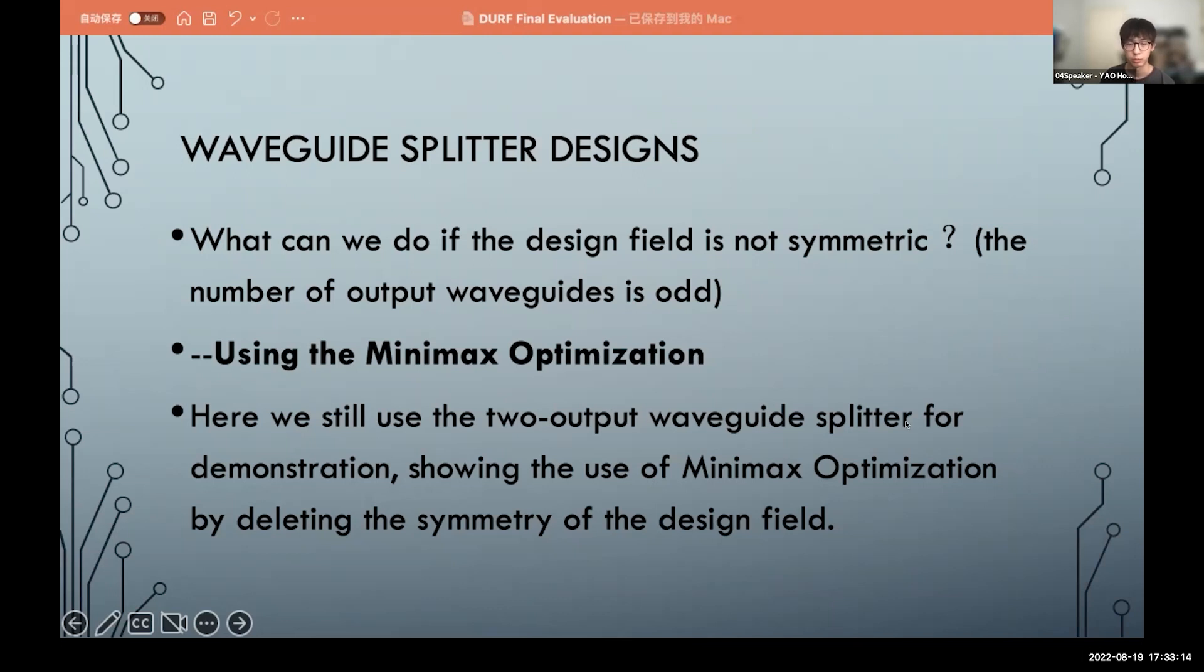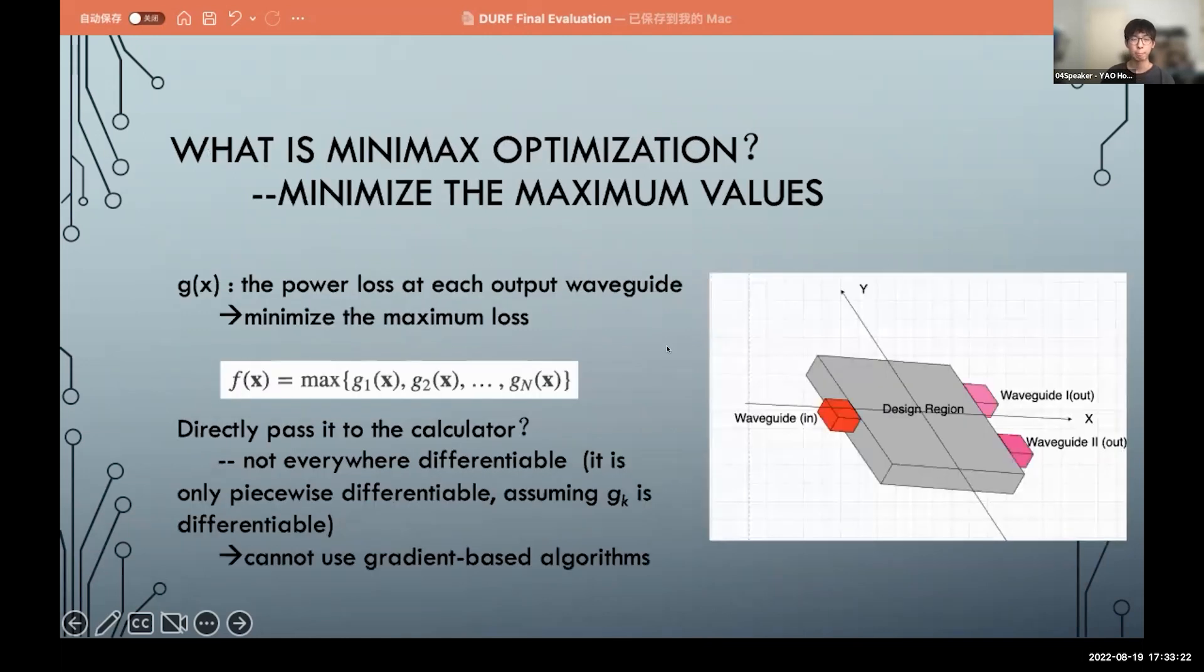But we still use two outputs for demonstration. And we shall use minimax optimization by deleting the symmetry. So what is minimax optimization? It means to minimize the maximum values. So for example, you have a lot of output loss, each output waveguide will have a loss. So you have this value and you want to minimize the maximum value of the output loss so that this loss will be smaller and be closer. So you have this f(x) means the maximum of the output loss. And why don't we directly pass this function to the calculator? Because it's not everywhere differentiable. Even if every g(x) is differentiable, but this function is not differentiable, so we cannot use a gradient-based algorithm that's provided by the adjoint method.